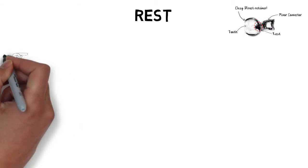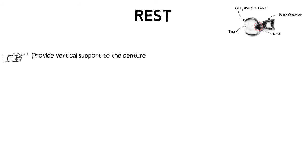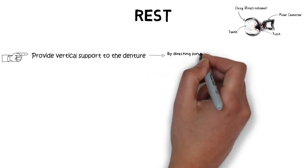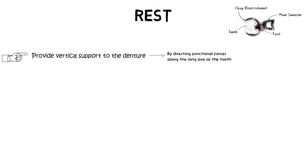So the rests are basically those components of the partial denture that provide the vertical support to the denture. They do this by diverging the functional forces applied onto the denture and directing them along the long axis of the abutment, and hence providing resistance against functional chewing forces.